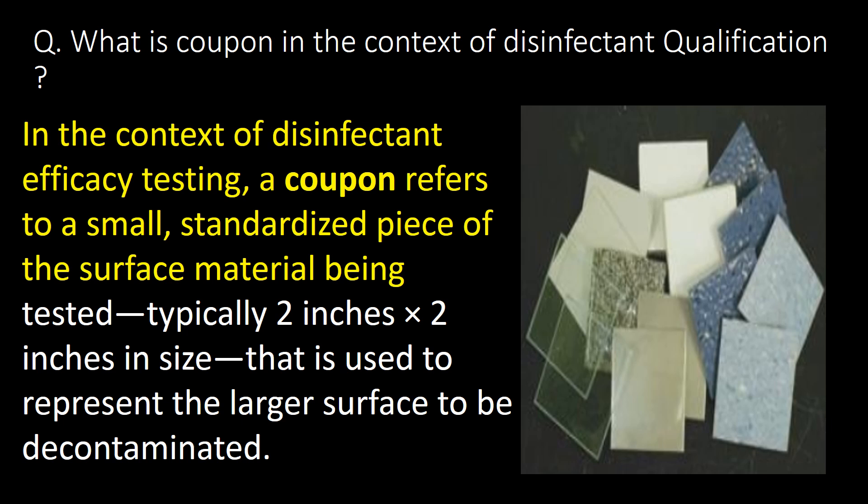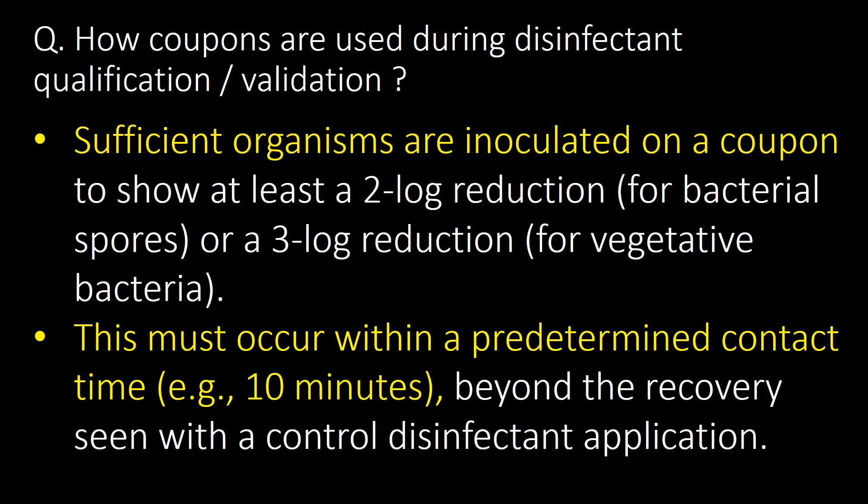What is a coupon in the context of disinfectant qualification? On the right side, you can see a photograph of a coupon. In the context of disinfectant efficacy testing, a coupon refers to a small, standardized piece of surface material being tested. It is typically 2 inches by 2 inches in size and used to represent the larger surface to be decontaminated. Sufficient organisms are inoculated on a coupon and allowed for at least 10 minutes of contact time to assess the efficacy of the disinfectant.